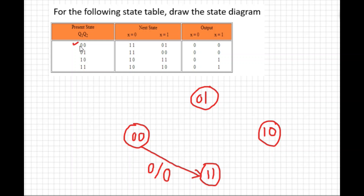State 00 will go to state 01 when x=1. Draw an arrow from 00 to 01, and when x=1 the output is 0, so label it x=1 / output 0.